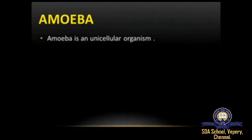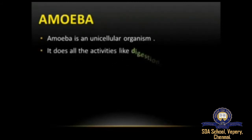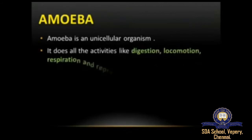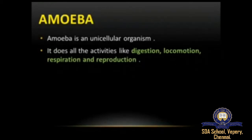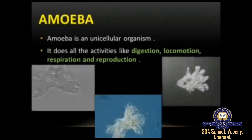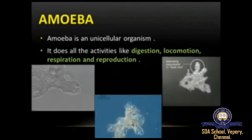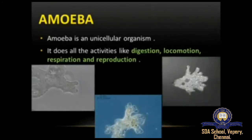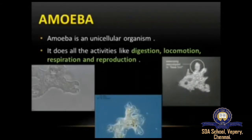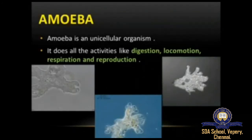An organism which contains only a single type of cell is called a unicellular organism. Amoeba is a unicellular organism that does all activities like digestion, locomotion, respiration, and reproduction. Locomotion is the movement or the ability to move from one place to another.